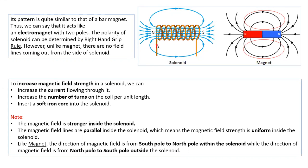The third way to increase field strength is to insert a soft iron core into the solenoid. When the magnetic field of the solenoid contacts the soft iron core, it aligns the magnetic domains of the iron, magnetizing the core so it also becomes a magnet. The iron core's magnetic field then combines with the solenoid's magnetic field, greatly increasing the overall field strength. Inside the solenoid the field lines are parallel, uniform, and closer to each other.